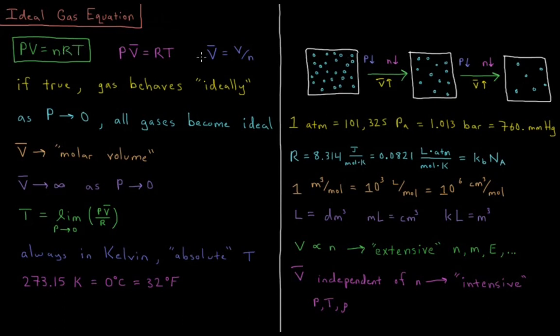Another way we can express that is using the quantity called the molar volume V bar. Whenever we have a quantity and we put a bar over top of it, that just means we take that quantity and divide it by the number of moles of whatever substance we have.